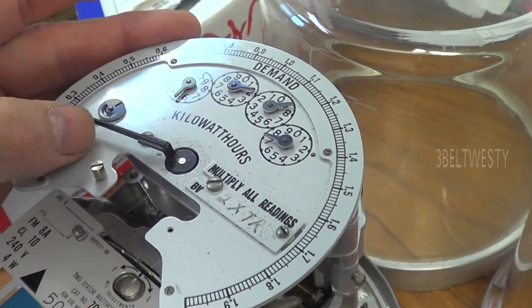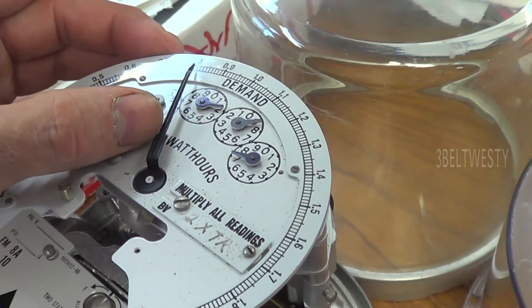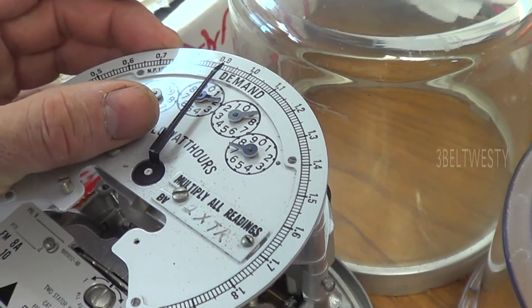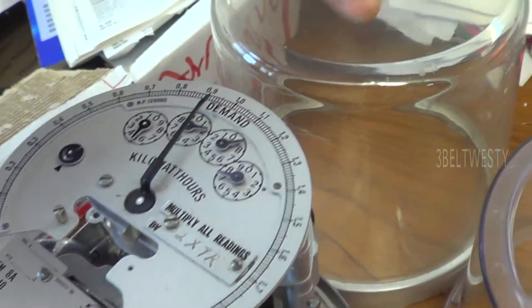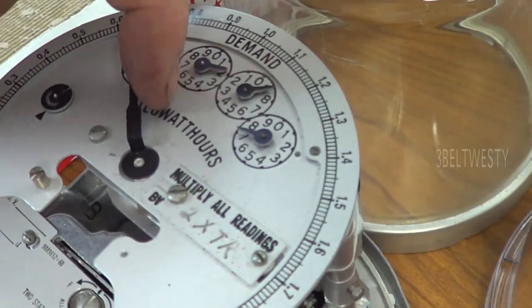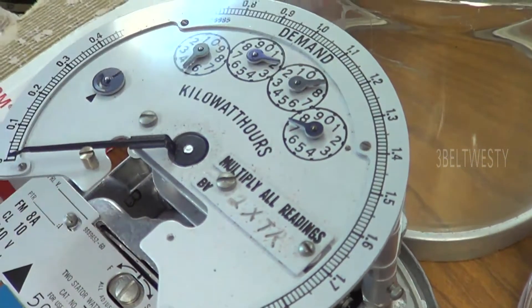And then when it's running the peak demand will go up here like this over the 15 to 30 minute period depending how it's programmed or set up. And then once a month utility worker will go ahead and turn this down and it'll move the back down here to zero.